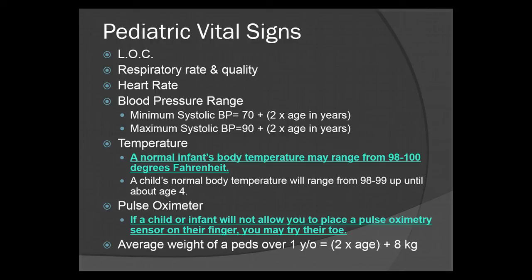For your child or infant, the average weight of a pediatric patient over 1 year old equals 2 times the age plus 8 kilograms. You always want to remember to convert all weights to kilograms on pediatrics, as most medication dosages are based on weight in kilograms. So for a 2-year-old, that's 2 times 2 equals 4, plus 8 kilograms, for a grand total of 12 kilograms — the average weight for a 2-year-old.